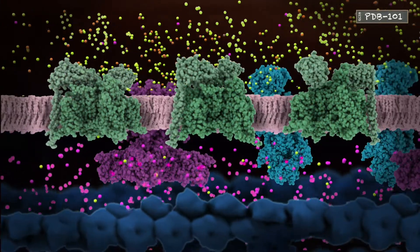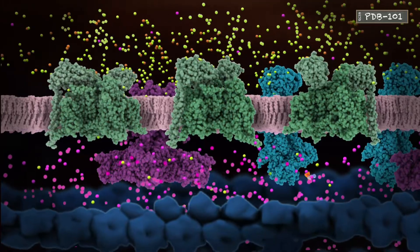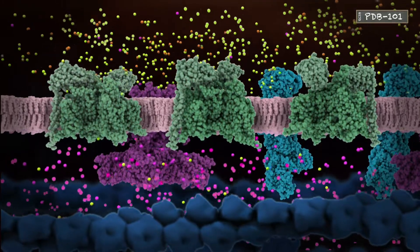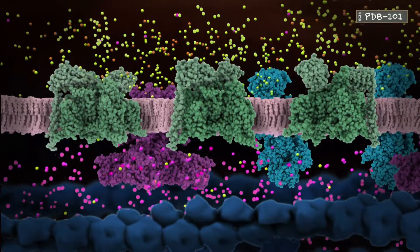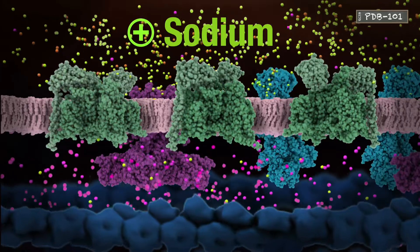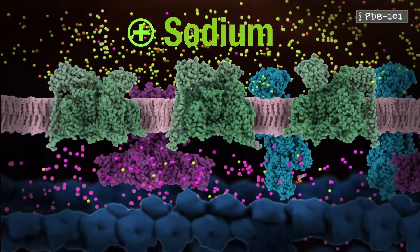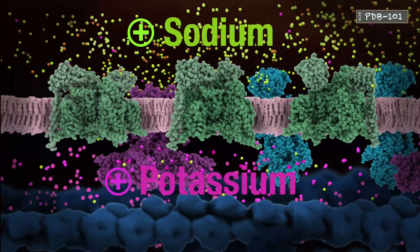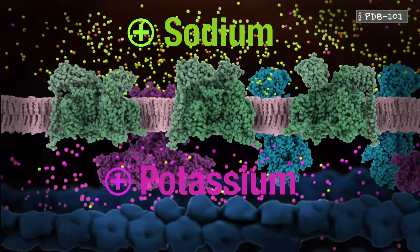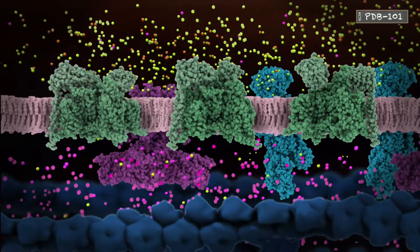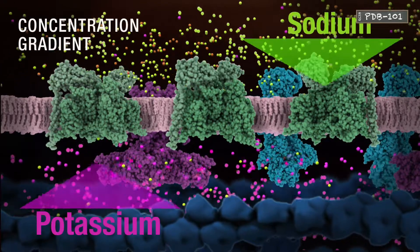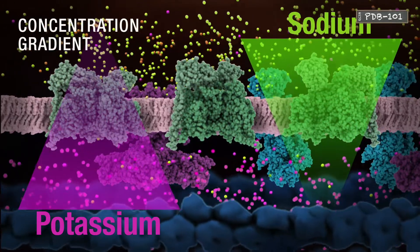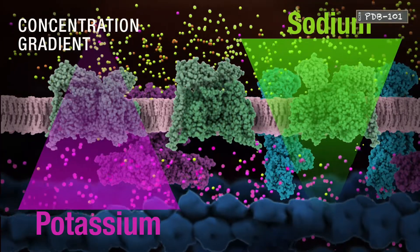In the resting state, various types of ions surround the membrane. Outside the neuron, the dominant ion type is sodium, while inside the dominant ion type is potassium. Both are positively charged. This unbalanced ionic distribution forms concentration gradients across the membrane.